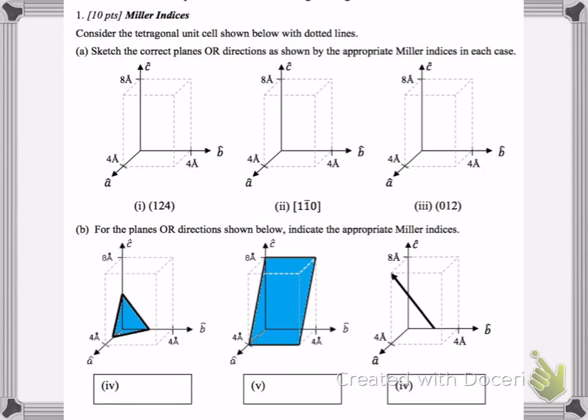So here we've got six problems involving Miller Indices and we're asked to sketch the correct planes or directions for the coordinates given below for part A. So in parentheses, remember parentheses denote planes and bracket notation denotes direction.